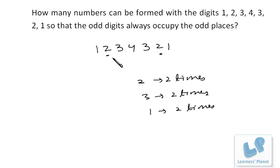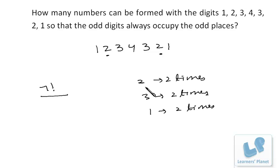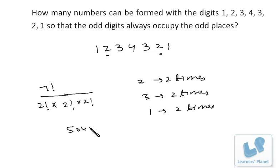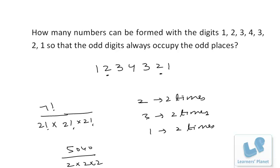First, without any conditions, how many numbers can be formed? All seven digits can be arranged in 7 factorial ways. We then divide by the repetitions: 2 appears twice so divide by 2 factorial, 3 appears twice so divide by another 2 factorial, and 1 appears twice so divide by another 2 factorial. That gives 5040 divided by 8, which equals 630 numbers without any condition.